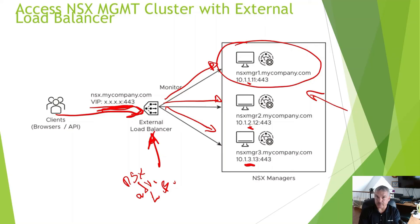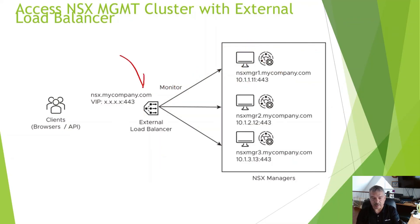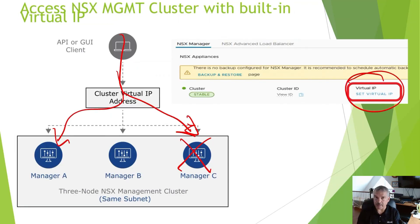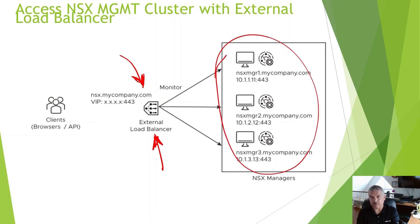If one of the managers should fail, the load balancer removes it from the pool and only sends requests to the surviving NSX managers — so fast failover, plus scalability. Disadvantages: you need a load balancer, and it's more complicated to set up compared to just clicking a link and typing an IP address. This option works when your managers are on different subnets, whereas the built-in virtual IP option doesn't. The option is yours.